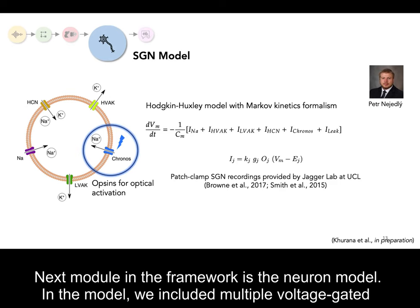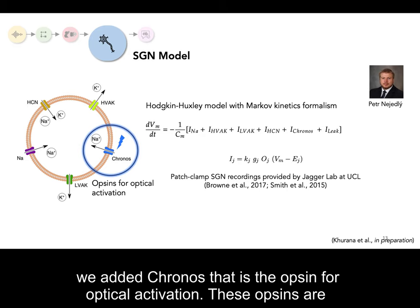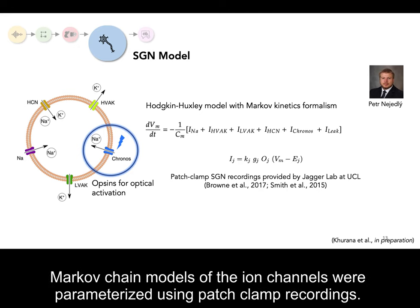The next module in the framework is the neuron model. We included multiple voltage-gated ion channels to create a Hodgkin-Huxley model with Markov kinetics formalism. In addition, we added Chronos — the opsin for optical activation. These opsins are light-sensitive proteins that are transduced in the neurons to enable optical stimulation. The Markov chain models of the ion channels were parameterized using patch clamp recordings.